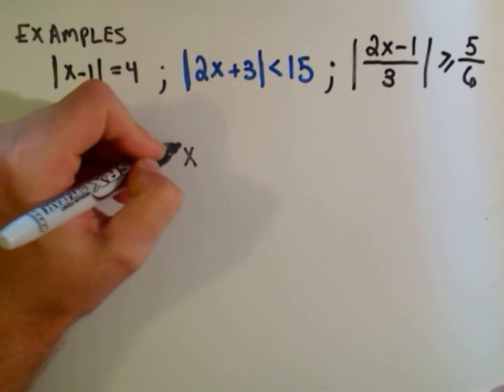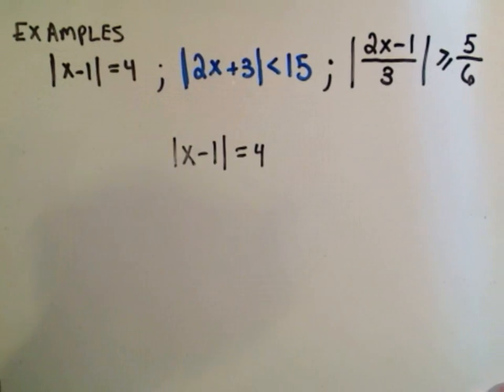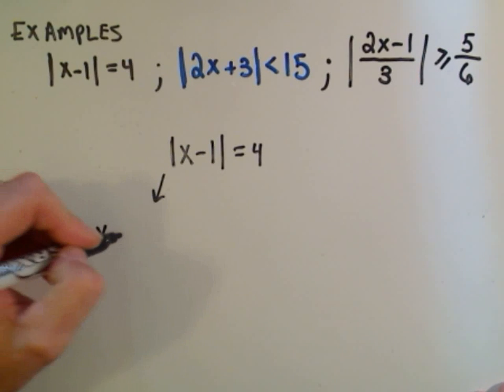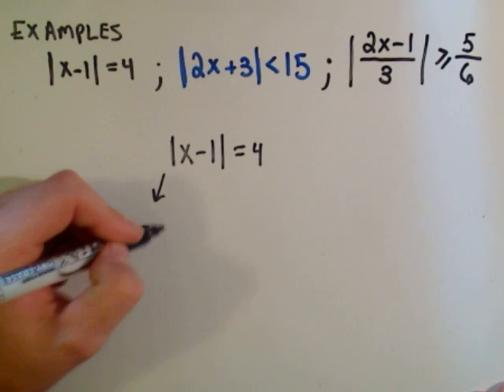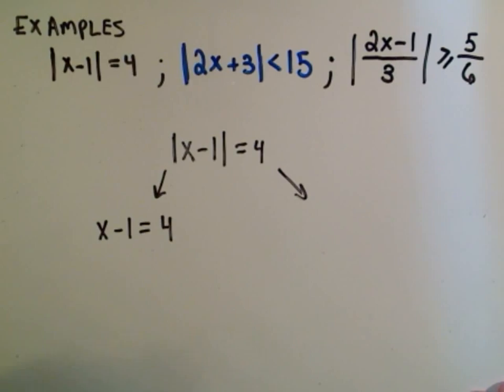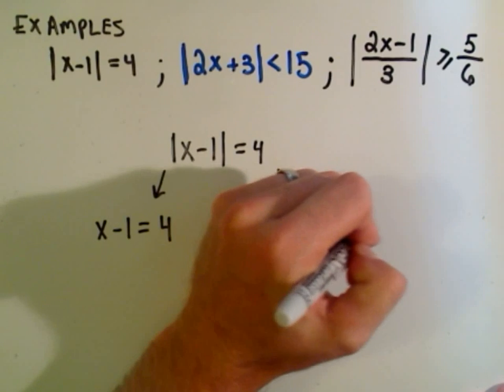For the first one, we have the absolute value of x minus 1 equals 4. This was our one case. You turn it into the equations x minus 1 equals 4, so you just remove the bars. Or you turn it into the equation x minus 1 equals negative 4.